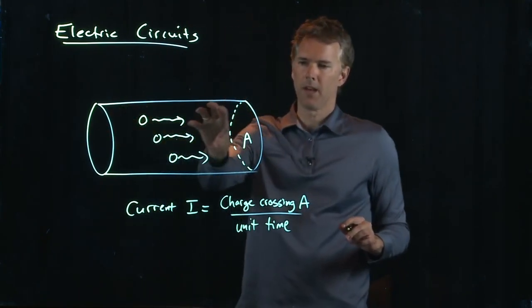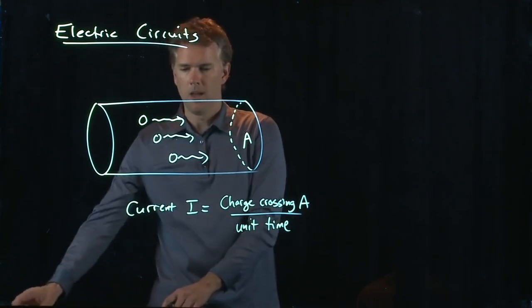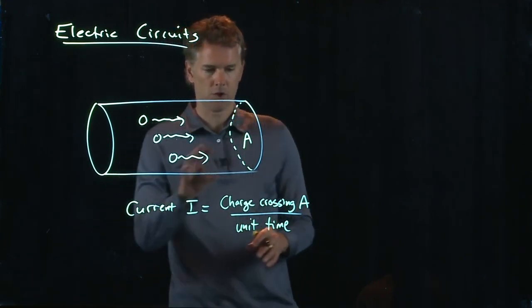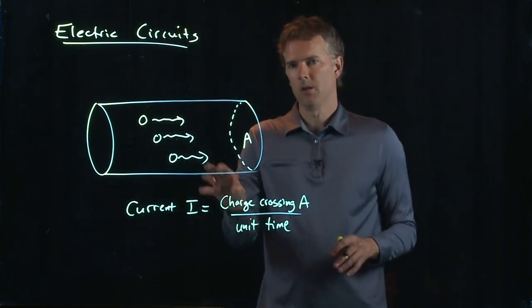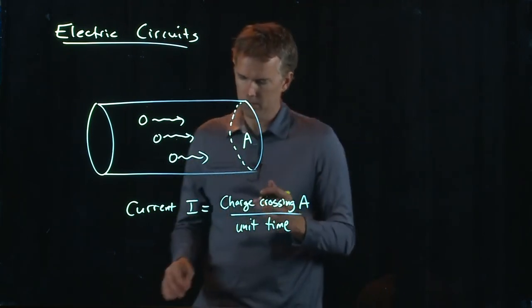All that charge is going to have to go through that cross-sectional area A in some amount of time. If you increase the amount of charge doing that, you increase the current. If you decrease the amount of time it takes to do that, you increase the current.